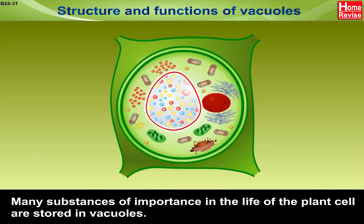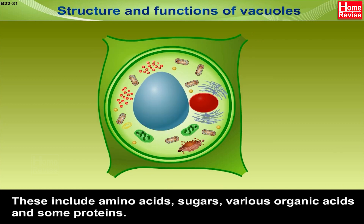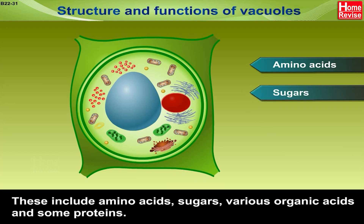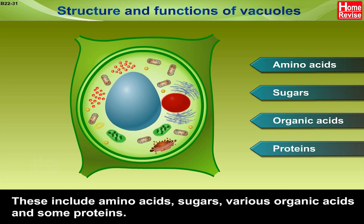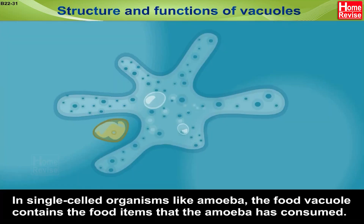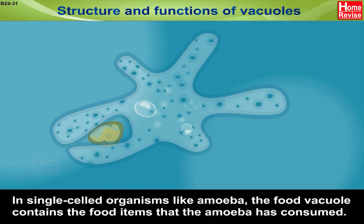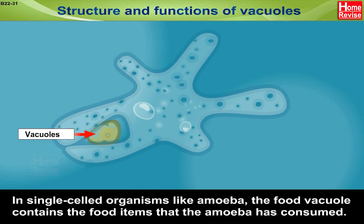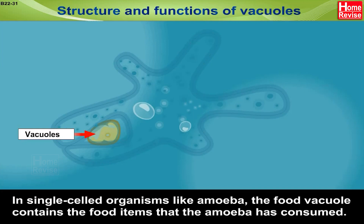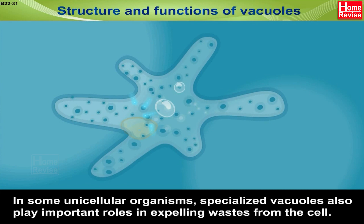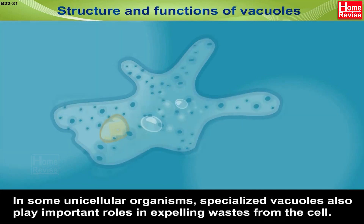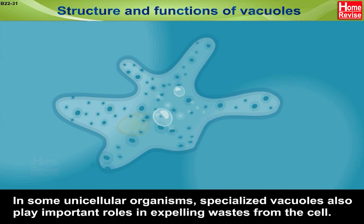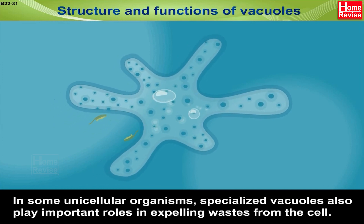These stored substances include amino acids, sugars, various organic acids and some proteins. In single-celled organisms like amoeba, the food vacuole contains the food items that the amoeba has consumed. In some unicellular organisms, specialized vacuoles also play important roles in expelling wastes from the cell.